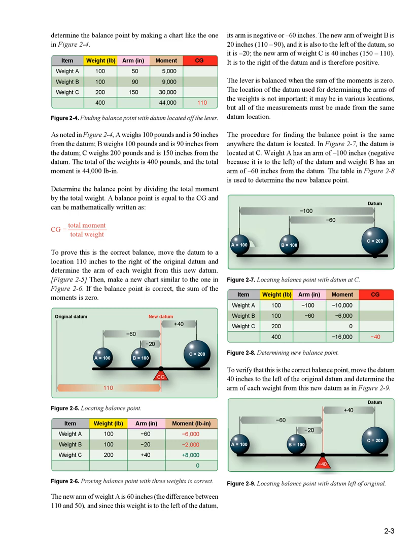As noted in figure 2-4: weight A is 100 pounds at 50 inches from the datum; weight B is 100 pounds at 90 inches; weight C is 200 pounds at 150 inches. The total weight is 400 pounds, and the total moment is 44,000 pound-inches. The balance point equals the CG, mathematically written as: CG = total moment ÷ total weight.